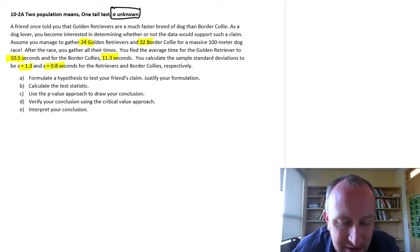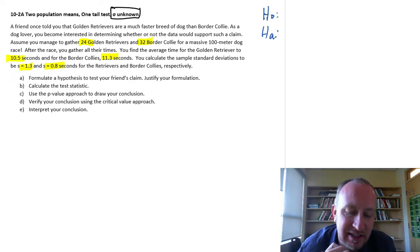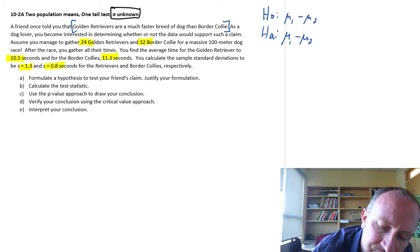You calculate sample standard deviations to be 1.3 and 0.8 for each of these two breeds of dog. Now formulate the hypotheses to test your friend's claim. Okay so what are we going to do? We'll start off same as always, null and alternative. And what are we going to be testing? Well our friend claimed a friend told us that golden retrievers are faster than border collies.